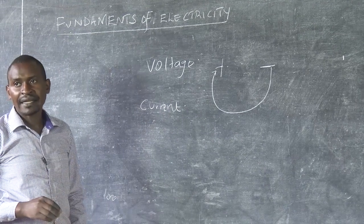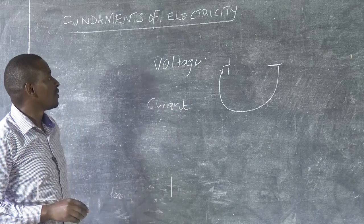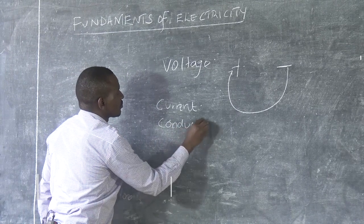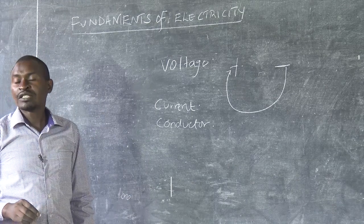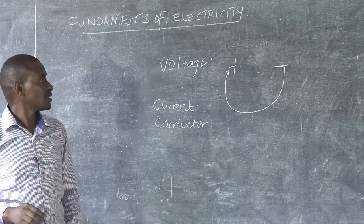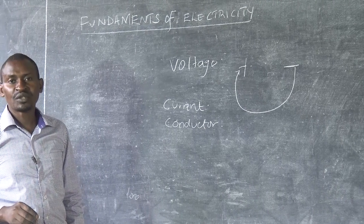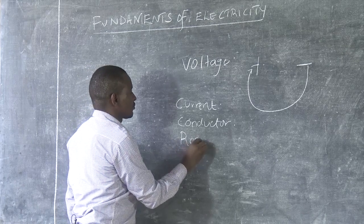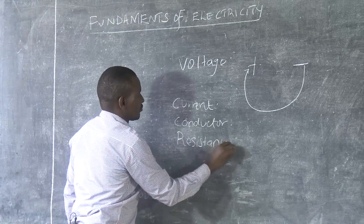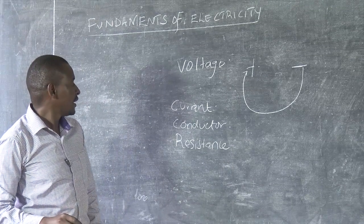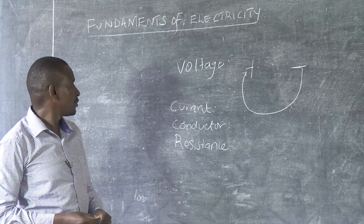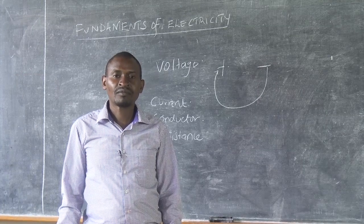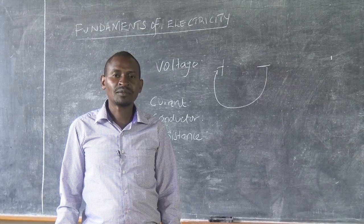The path that electrons take is known as a conductor. And because electrons are flowing so fast, there is a chance they are going to get opposition, and that opposition to the flow of current is known as resistance. All these factors are what we shall be discussing in the next topic. We have come to the end of the lesson. Your presenter was Daniel Dungu — stay tuned till next time.